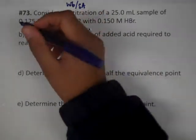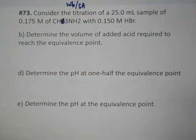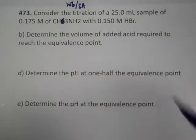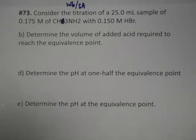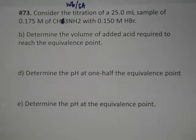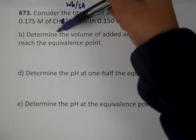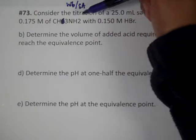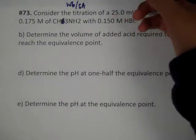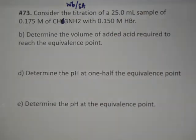The next problem is number 73 and it's going to be a weak base strong acid problem. We're going to do parts B, D, and E. It's the same kind of situation: you have a 25 milliliter sample of a 0.175 molar weak base, and we're going to titrate it with 0.15 molar HBr, which is a strong acid.